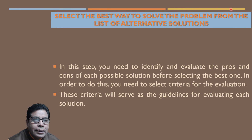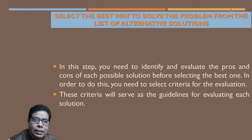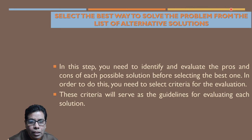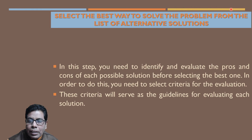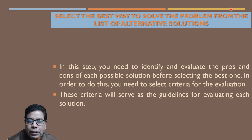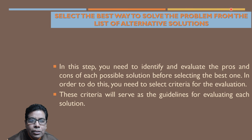The next step is to select the best way to solve the problem from the list of alternative solutions. When you have different solutions, you have to select the best one. In this step, you need to identify and evaluate the pros and cons of each possible solution before selecting the best one. You need to select criteria for evaluation — considering what is likely to happen if you proceed with each possible solution: what will be the upside, the advantages; what will be the downside, the disadvantages. Some options will have two sets of consequences — short-term and long-term. This criteria will serve as guidelines for evaluating each solution and then choosing the best one.